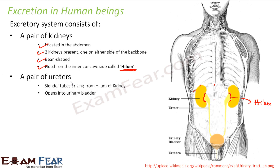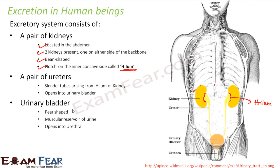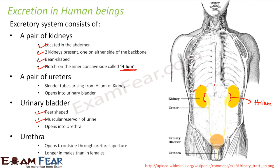We have a pair of ureters — slender tubes arising from the hilum of each kidney. They are thin tube-like structures that open into the urinary bladder. The urinary bladder is a pear-shaped structure and acts as a vascular reservoir of urine. It stores all the urine and opens into the urethra, which opens to the outside through the urethral aperture.